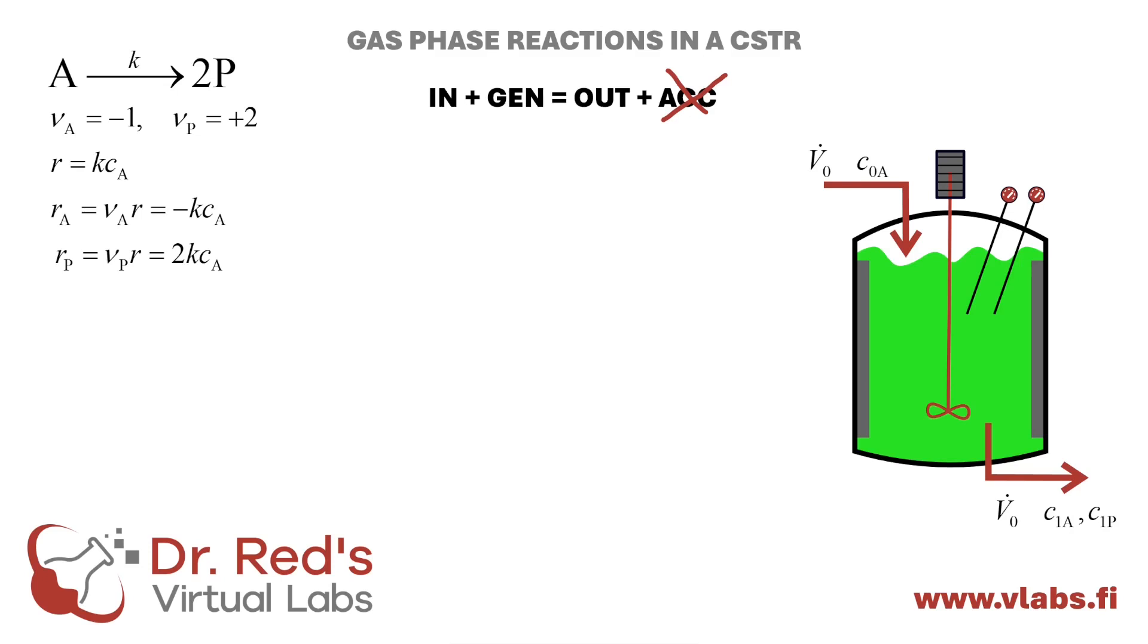In this liquid phase system, the density is essentially constant, so the volumetric flow rate, V-naught, is conserved at both the reactor's inlet and outlet. We divide by V-naught and replace the ratio of reactor volume to volumetric flow rate with the term spacetime, tau-naught.